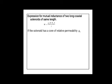The expression for mutual inductance of two long coaxial solenoids having the same length is M = μ₀N₁N₂A/L, where M is mutual inductance, μ₀ is permeability of free space, N₁ is number of turns of the primary, N₂ is number of turns of the secondary, A is area of the coil, and L is length. If the solenoid has a core of relative permeability μᵣ, include it: M = μ₀μᵣN₁N₂A/L.